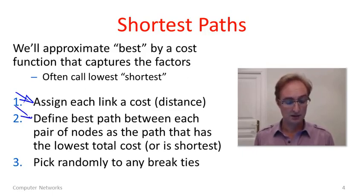And then we simply define the best path through the network between every pair of nodes as the path through the network that has lowest total cost or is shortest. And if we turn up any ties in that process and a couple of different paths have an equal cost, then we're just going to randomly break those ties and pick a path. Whatever we pick out of those ones, since it will have lowest cost, it'll be good. It will be best according to our definition.